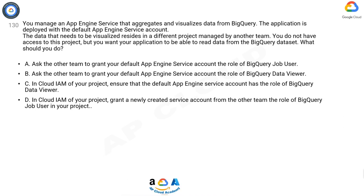Question 130. You manage an App Engine service that aggregates and visualizes data from BigQuery. The application is deployed with the default App Engine service account. The data that needs to be visualized resides in a different project managed by another team. You do not have access to this project, but you want your application to be able to read data from the BigQuery dataset. What should you do?